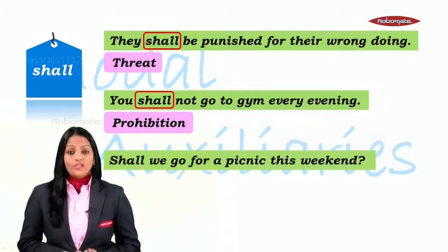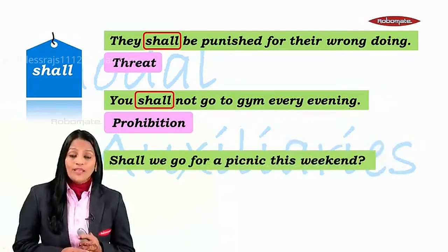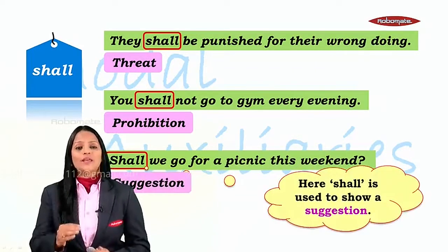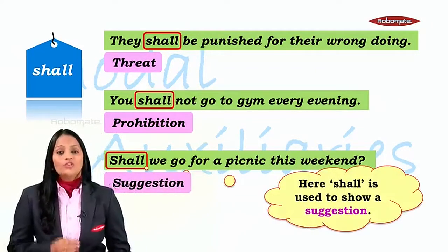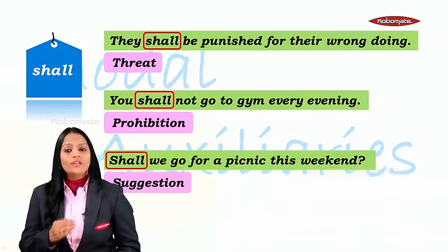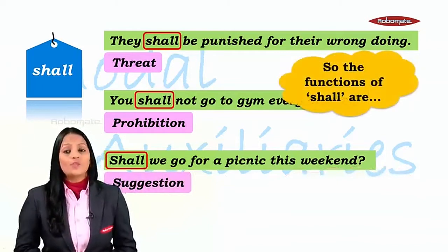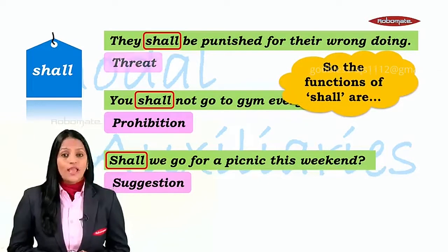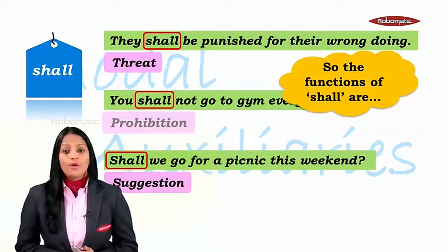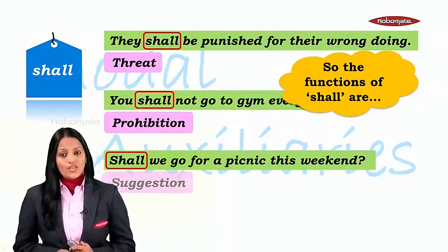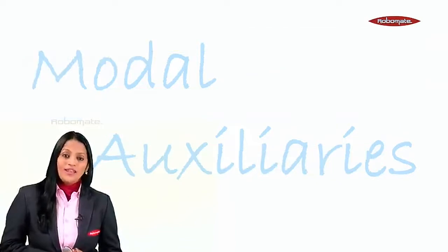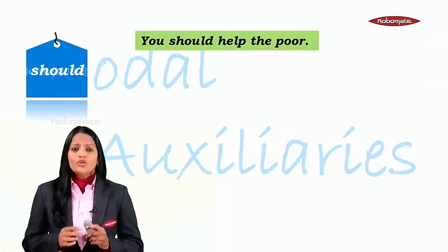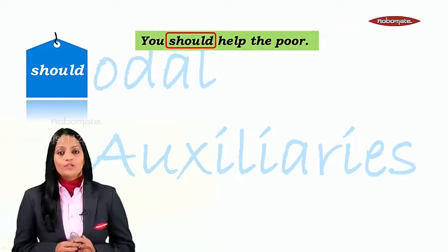Next: 'Shall we go for a picnic this weekend?' 'Shall' expresses suggestion here. So the three functions expressed by 'shall' are: threat, prohibition, and suggestion.